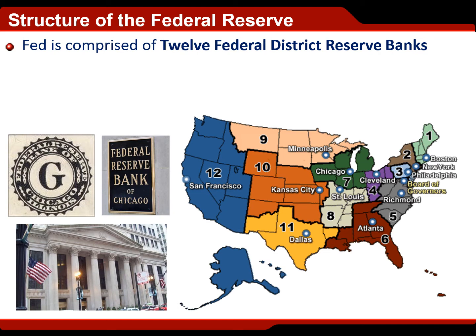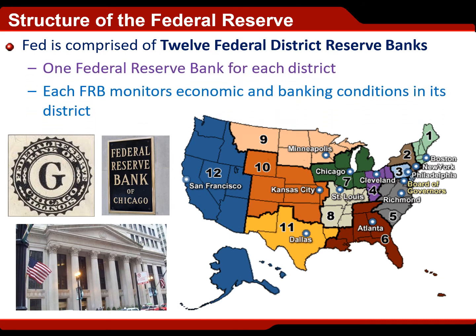Why are the districts out west so much bigger than the ones in the east? If you remember your geography, the western half of the United States is not nearly as densely populated as the eastern half. In fact, 70% of the US population is located east of the Mississippi River. Since the regional banks have to service all the banks within their borders, areas with bigger populations have more banks and can't cover as much ground. The San Francisco Fed covers an enormous area because a lot of that region is just wide open desert and prairie with not a lot of people or banks.